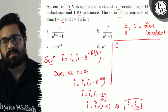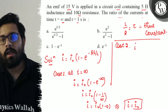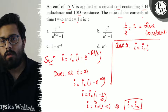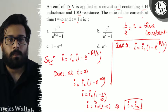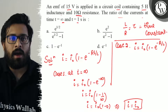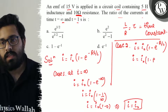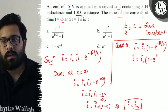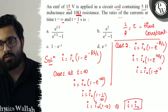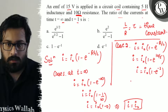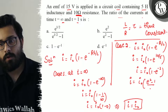In case two, t equals 1. So i equals i naught times (1 minus e raised to power minus R by L). The value of R is 10 and the value of L is 5, so i equals i naught times (1 minus e raised to power minus 2). This simplifies to i equals i naught times (e square minus 1) upon e square.